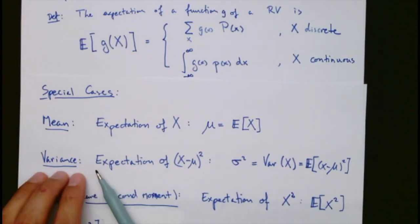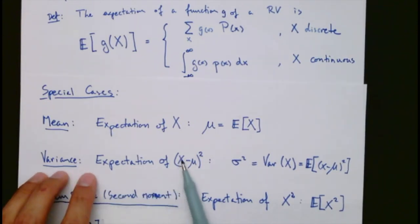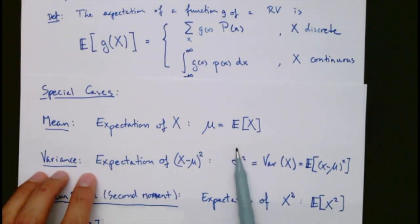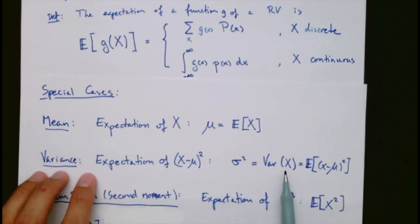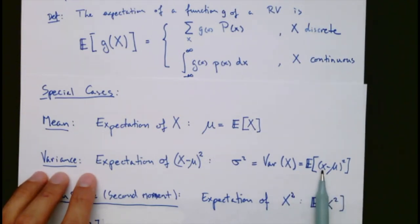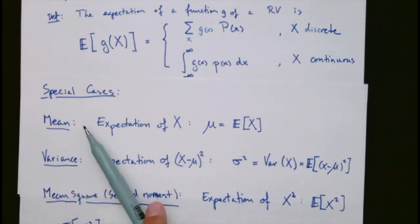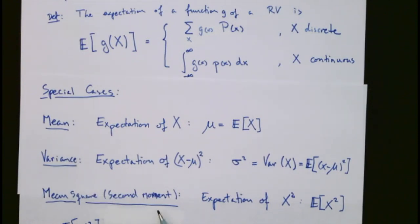Similarly, we can define the variance of x. That is the expectation of (x minus its mean) squared — so the squared deviation from the mean. This is denoted by σ², or Var(x), and by definition it equals E[(x − μ)²].